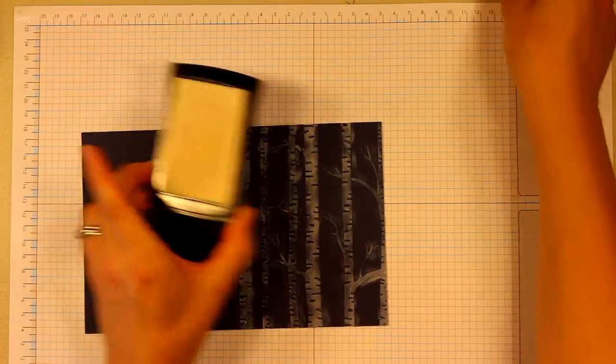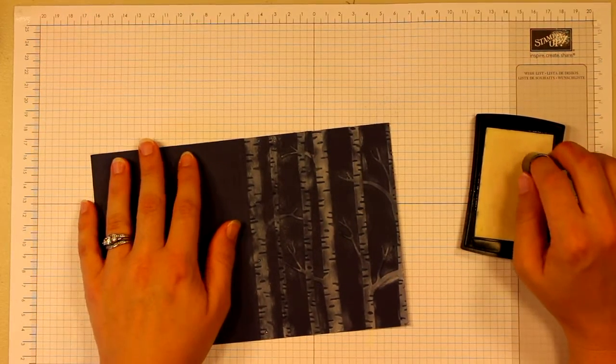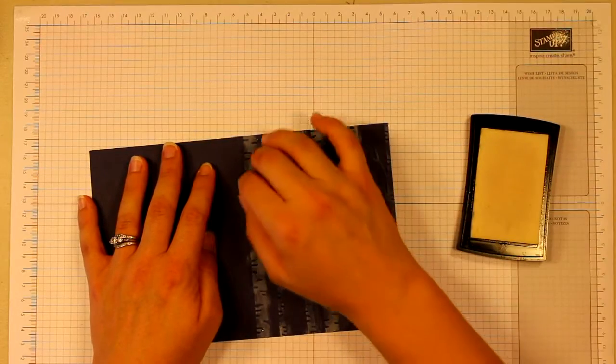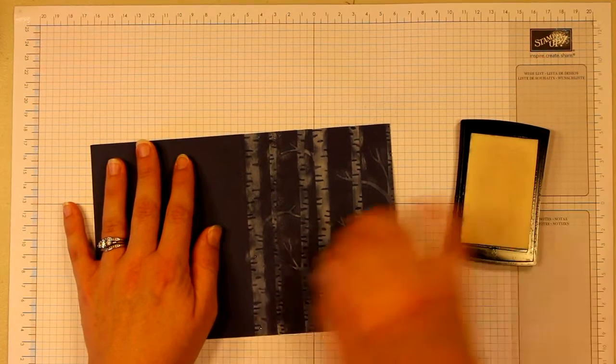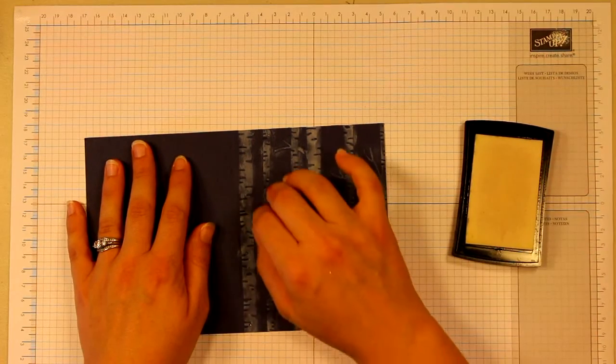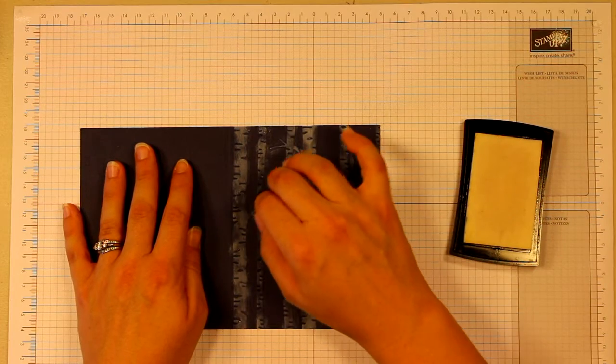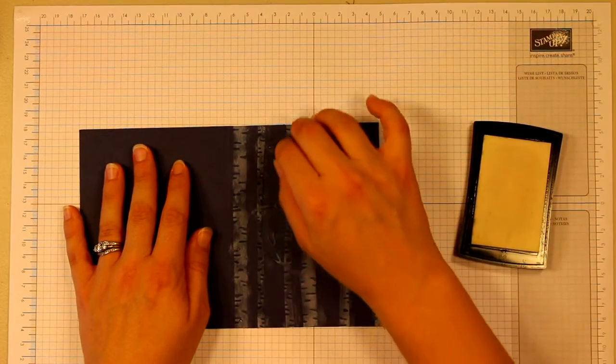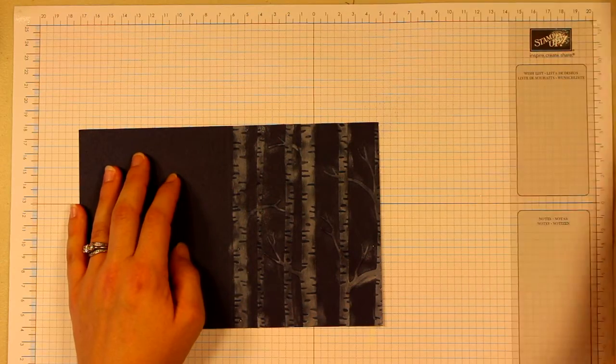I'm actually going to repeat the same thing with some Versamark. The way I'm going to add the glitter is with the embossing powder, our Iridescent Ice embossing powder. So I am going to go back over this and the hope is that you're only getting the trees, not the areas in between, even though you will get some of the areas in between and that's okay.